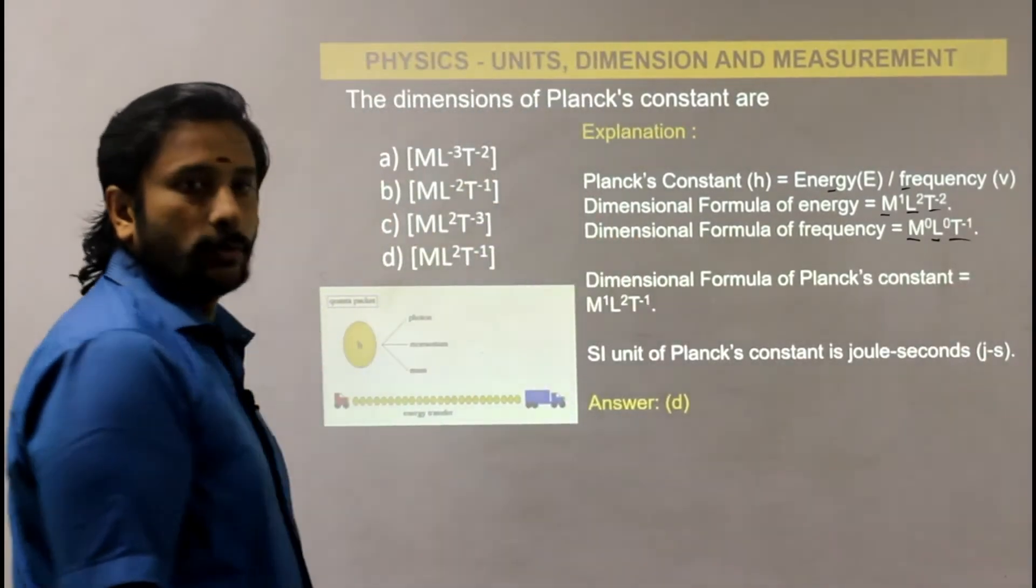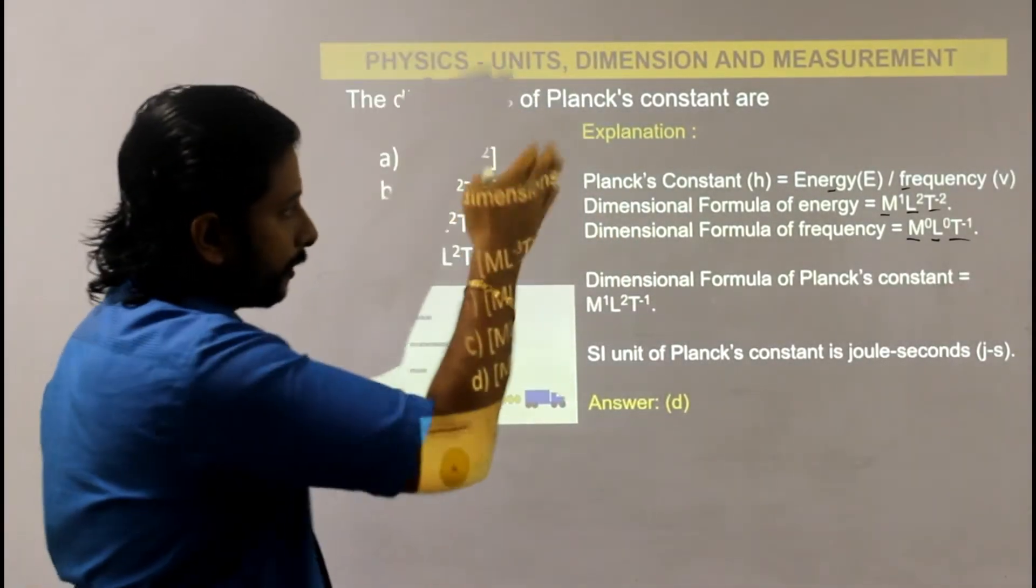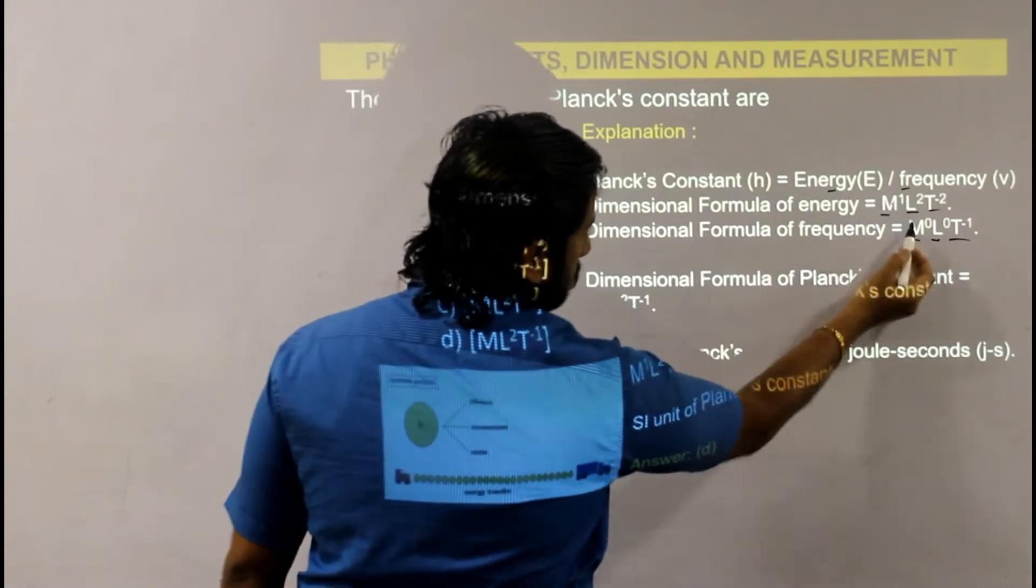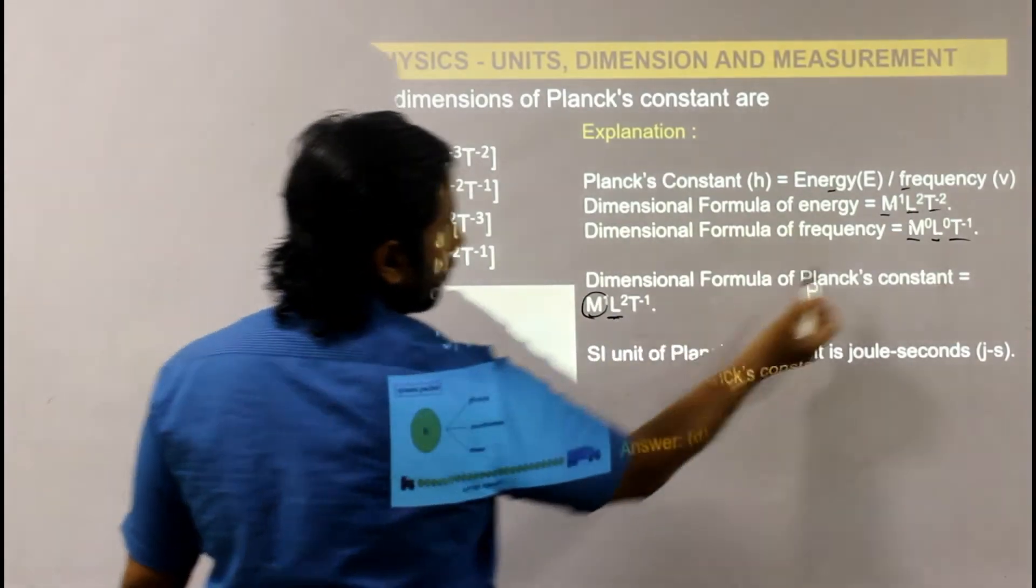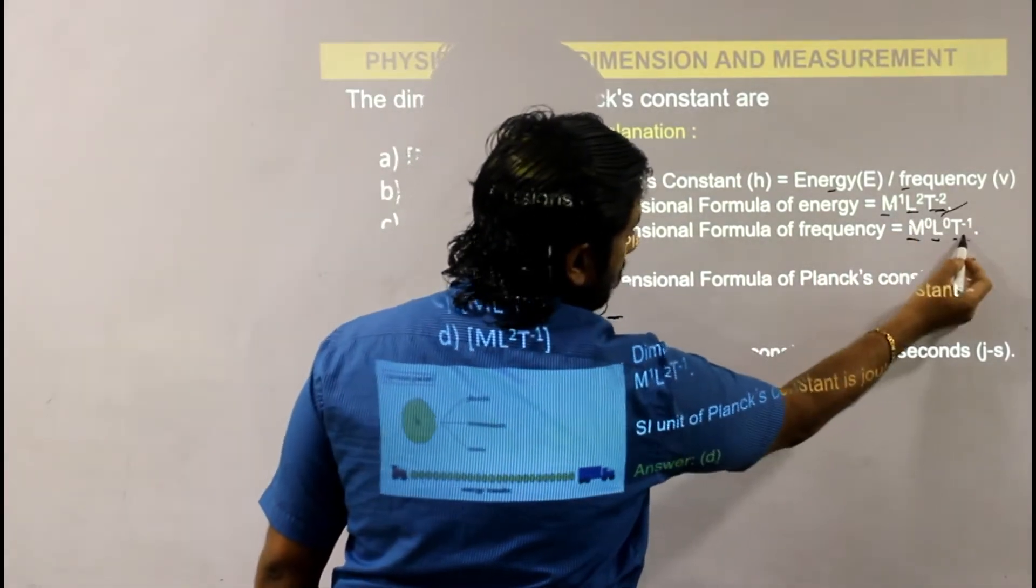So the dimensional formula, if you divide them, you will get L² and T⁻² divided by T⁻¹, which gives T⁻¹.